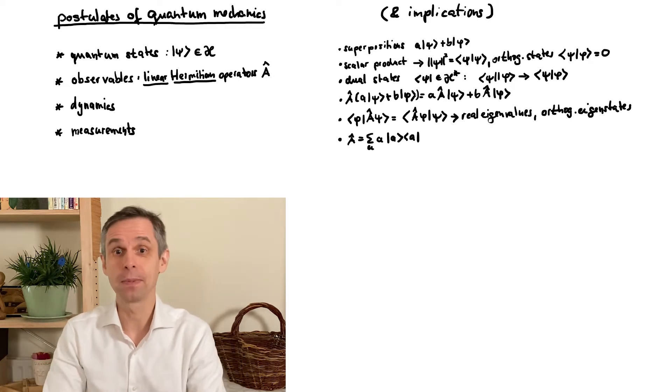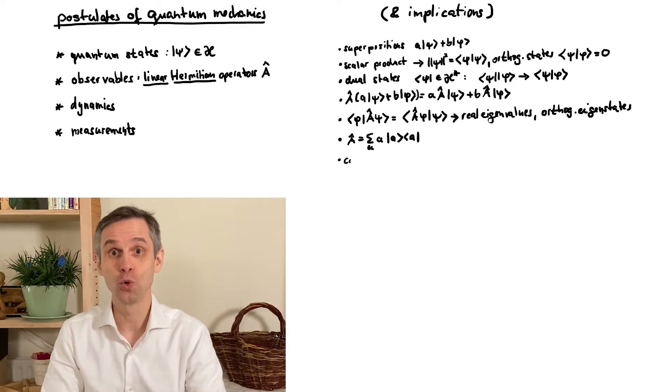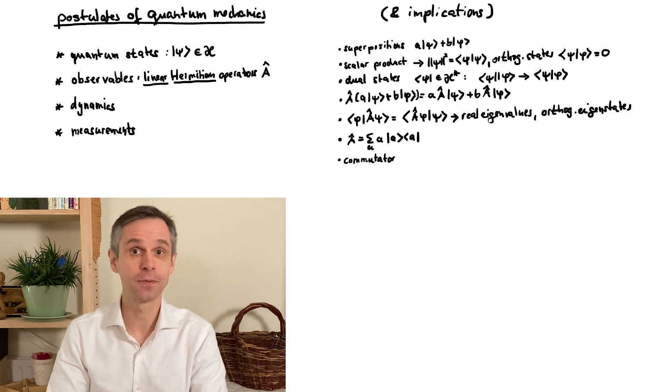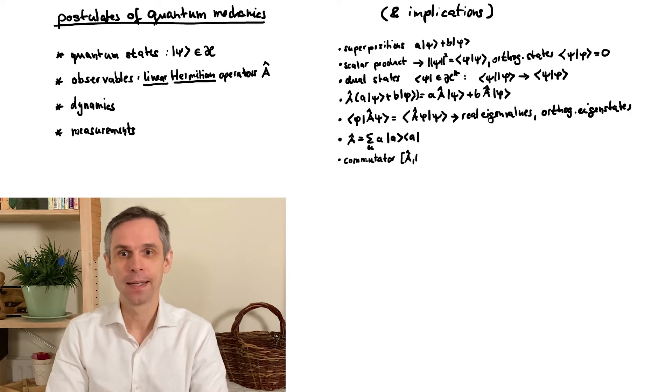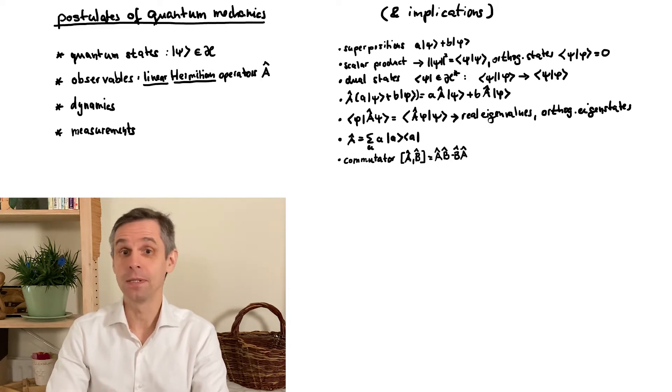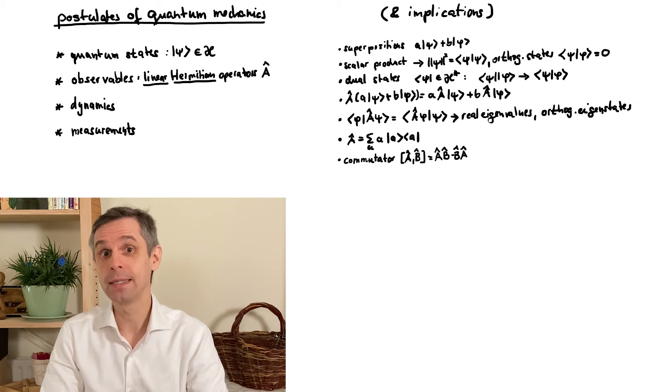Finally, just as we can compare different states by the scalar product, we can use the commutator to compare different observables. And we already described what this implies for the sets of eigenstates. We will expand on this point very soon, when we have listed the other postulates.